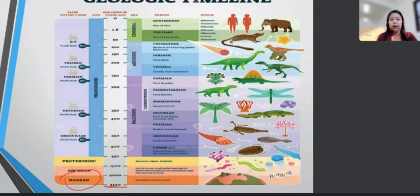So that is the formation of the earth. Followed by 4,000 million years ago, that the earth's crust had cooled enough to allow the formation of continents. So after several million years ago, they believed that the earth's crust already cooled and solidified, wherein there is the formation of the different continents.